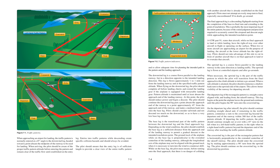The base leg is the transitional part of the traffic pattern between the downwind leg and the final approach leg. Depending on wind conditions, the pilot should establish the base leg at a sufficient distance from the approach end of the landing runway to permit a gradual descent to the intended touchdown point. The ground track of the airplane while on the base leg is perpendicular to the extended centerline of the landing runway, although the longitudinal axis may not be aligned with the ground track when it is necessary to turn into the wind to counteract drift.